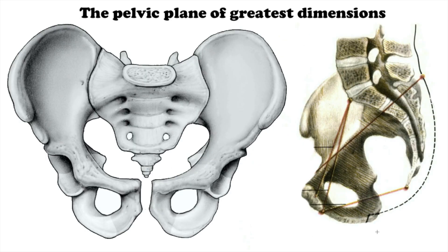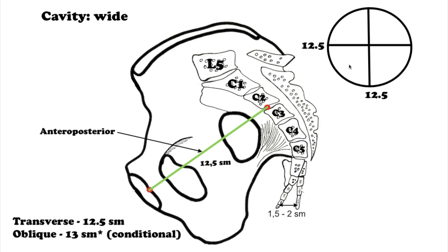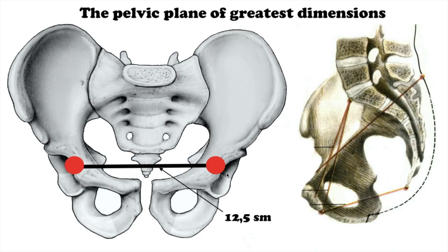The pelvic plane of greatest dimensions is limited from behind by the junction of the second and third sacral vertebrae, from the sides by the middle of the femoral fossae, and from the front by the middle of the internal surface of the symphysis. In this plane two dimensions are differentiated: straight and transversal. The straight dimension, from the projection of the junction of the second and third sacral vertebrae to the middle of the internal surface of the symphysis, measures 12.5 cm. The transversal dimension, between the middles of the femoral fossae, also measures 12.5 cm.